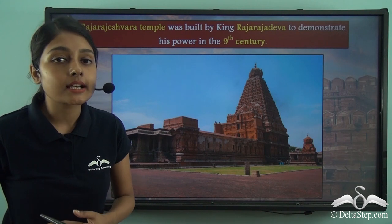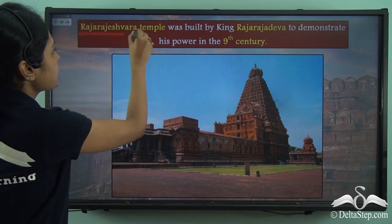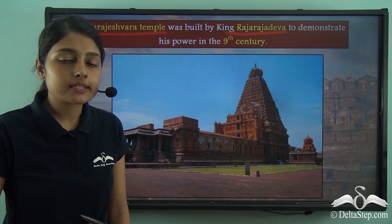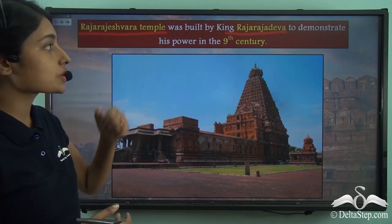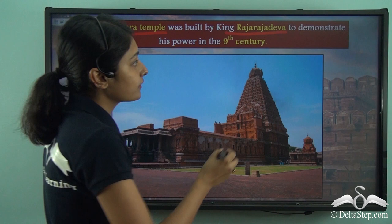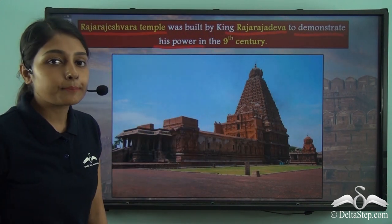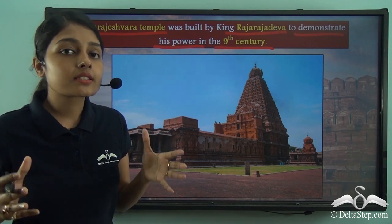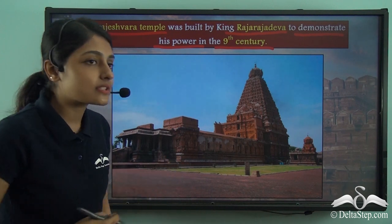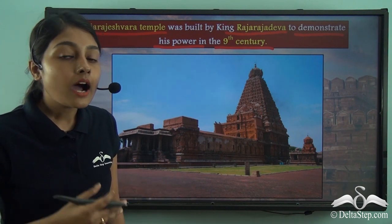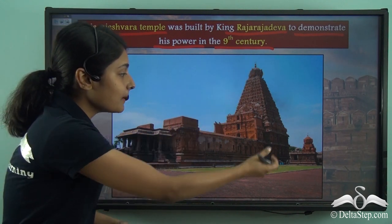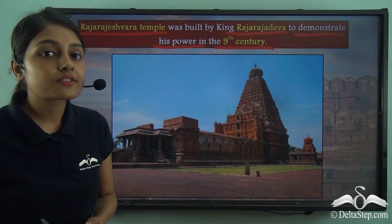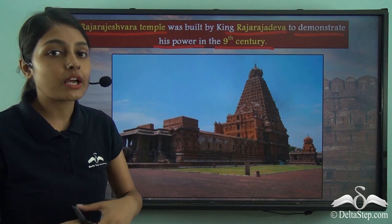This brings us to the example of the Raja Rajeshwara temple. The Raja Rajeshwara temple was built by King Raja Raja Deva, who belonged to the Chola dynasty. King Raja Raja Deva built this temple in the 9th century with the purpose of demonstrating his power. The temple is huge and magnificent, and this magnificence tells you how powerful and wealthy this ruler was. Without wealth, such a magnificent temple cannot be built, so it testifies to the power and wealth of the king.